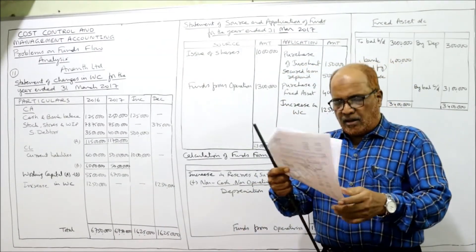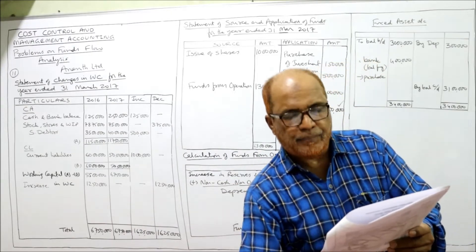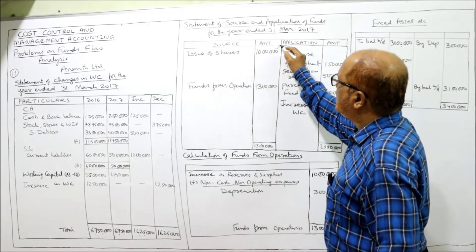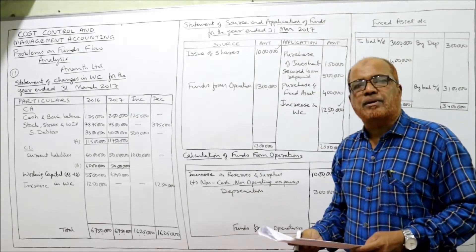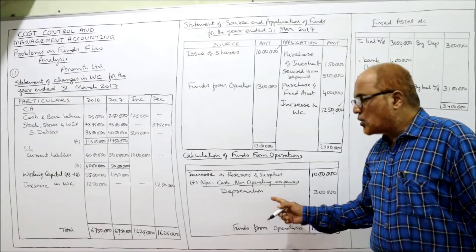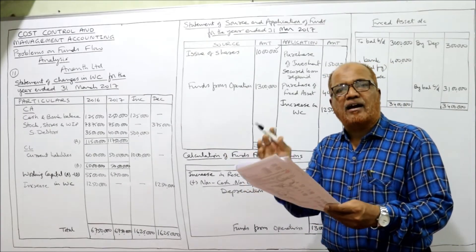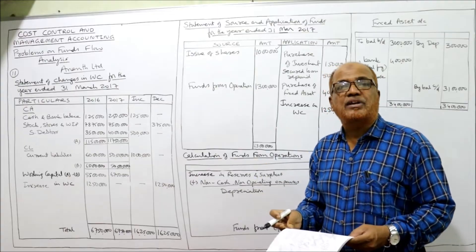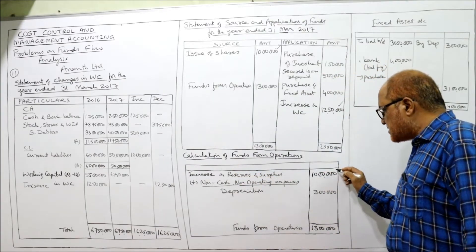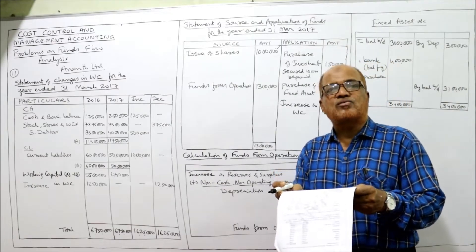Now the other items: share capital last year 40 lakh, current year 50 lakh — so during the current year shares were issued for 10 lakh. Issue of shares 10 lakh is taken on the source side. Next comes reserves and surplus, which we use to find out funds from operation. Since it's a company, every year profit will be kept in reserves and surplus. Last year reserves and surplus is 5 lakh, current year is 15 lakh — so reserves and surplus increased by 10 lakh.